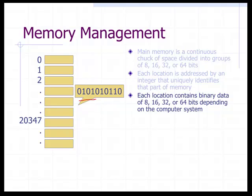This binary data could represent an image, video, audio, or anything that can be represented in binary. For example, an image obviously needs more than 32-bits of data, so you'll need as many chunks of memory to hold that particular object.